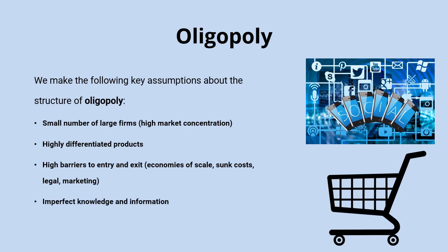There's also imperfect knowledge and information in this market structure, which means it's not always easy for customers to make comparisons between different firms. Part of the reason is the lack of homogeneity between products — those differentiated products mean that price differentials aren't always obvious. Finally, firms are price makers, meaning they have the power to set their own prices, though there is often interdependence between firms as well.